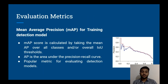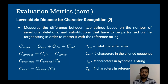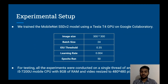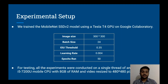For experimental analysis, we use MAP as the evaluation metric for training — specifically the mean average precision across all classes over all intersection-over-union thresholds. For character recognition evaluation, we use the Levenshtein distance, which measures the difference between two strings based on the number of insertion, deletion, or substitution operations needed to convert a target string to a reference string. MobileNet SSD V2 was trained on a Tesla T4 GPU on Google Colab. For testing and inference, all experiments were run on a single thread of an Intel Core i5-7200U mobile CPU with 8GB of RAM, with video resolution of 418×480 pixels.